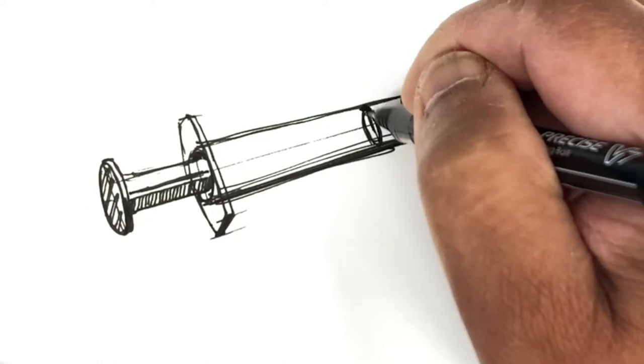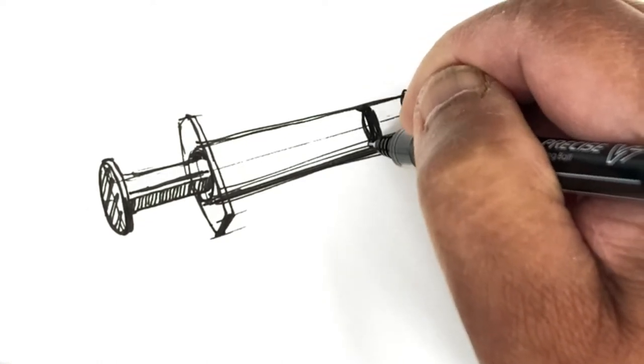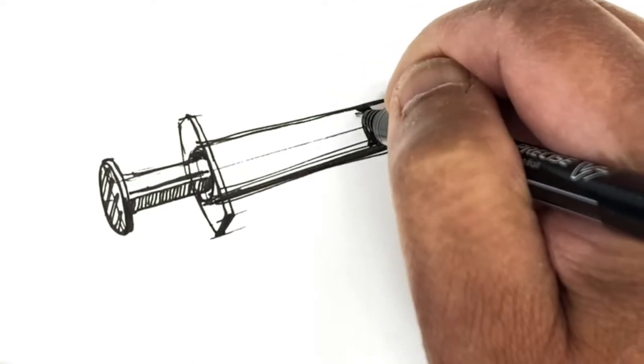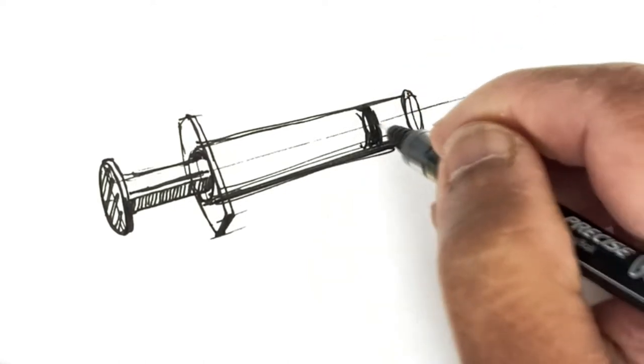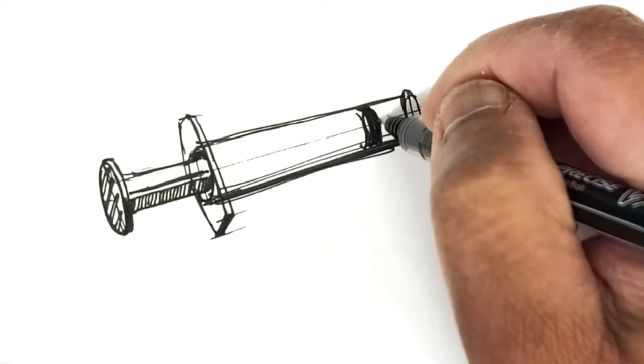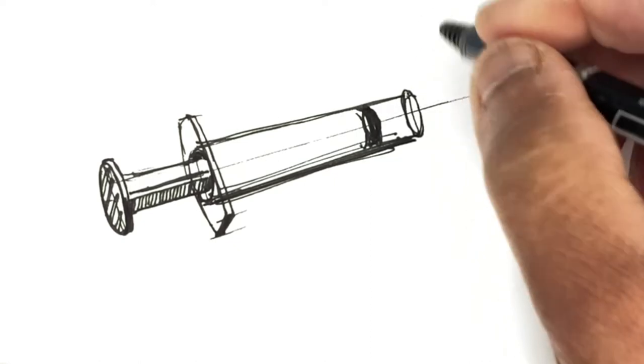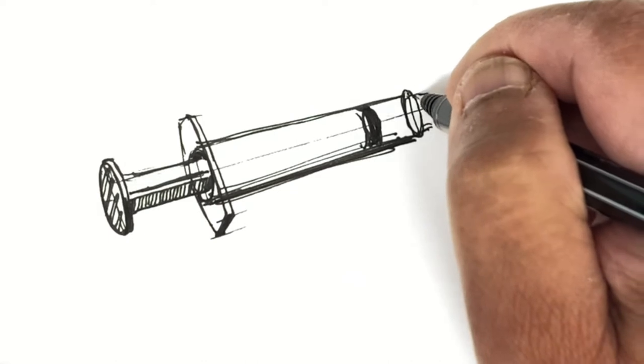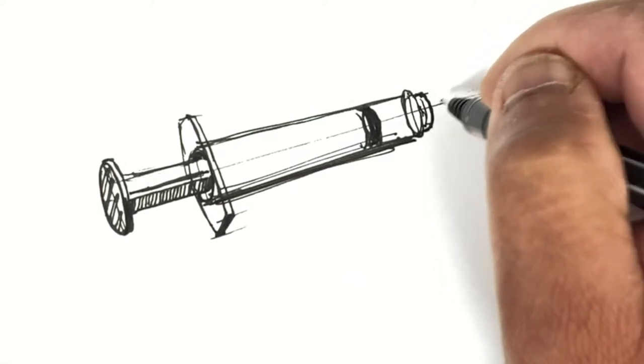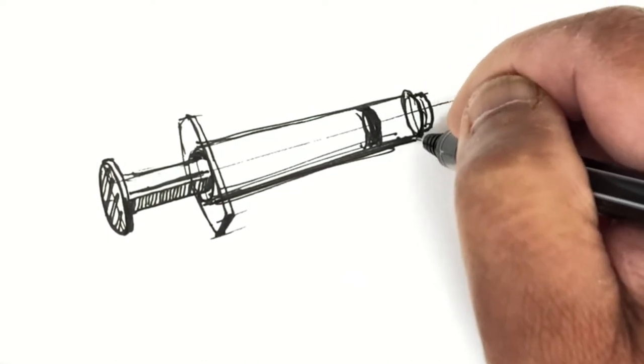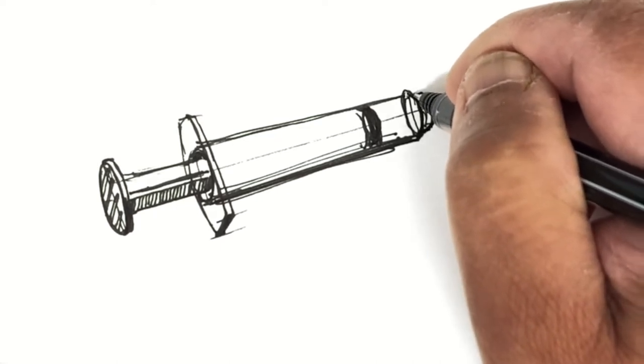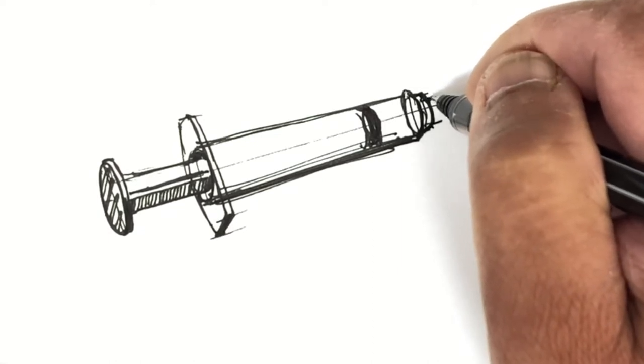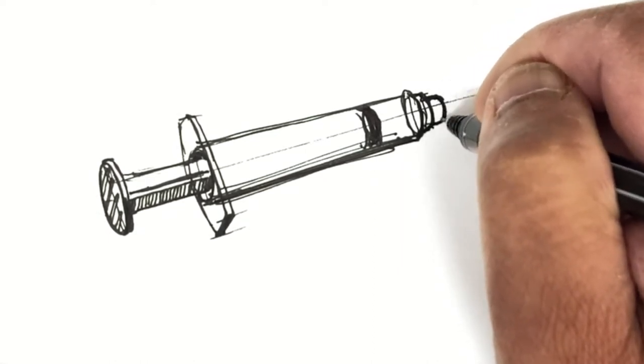I'll darken this because usually it's a black rubber. For a lot of these ovals, we're primarily looking at the right side of the oval that we drew. We would normally erase the left part if this was a pencil drawing. I'll extend the barrel here where the needle would actually screw on.